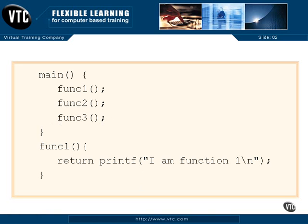Now what I want you to do is stop the video here in just a second and go create this small program. I called it func1.c, and I want you to create a func2 and a func3 just like this right below your definition of func1, and make them do the same thing — a return printf saying 'I am function two' and 'I am function three' — then compile and link the whole thing. Give that a shot, and when you're done, come back and start the video again and we'll go take a look at doing the same thing.